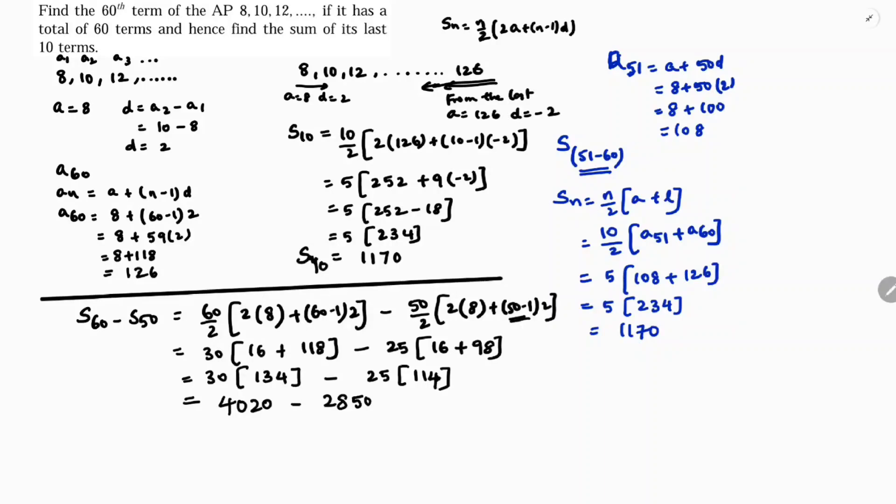So 4020 minus 2850 is the answer, same, 1170. You can do either method. See this is the first one from the end. This I use from 51 to 60 terms. This is S60 minus S50, you will get the last 10 terms. So there are three methods in it.